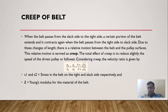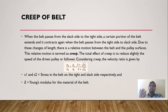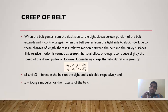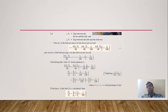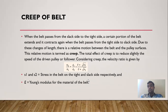In summary: the basic velocity ratio is N₂/N₁ = d₁/d₂. Considering belt thickness: N₂/N₁ = (d₁ + t)/(d₂ + t). Considering both thickness and slip: N₂/N₁ = (d₁ + t)/(d₂ + t) × (1 − s/100).